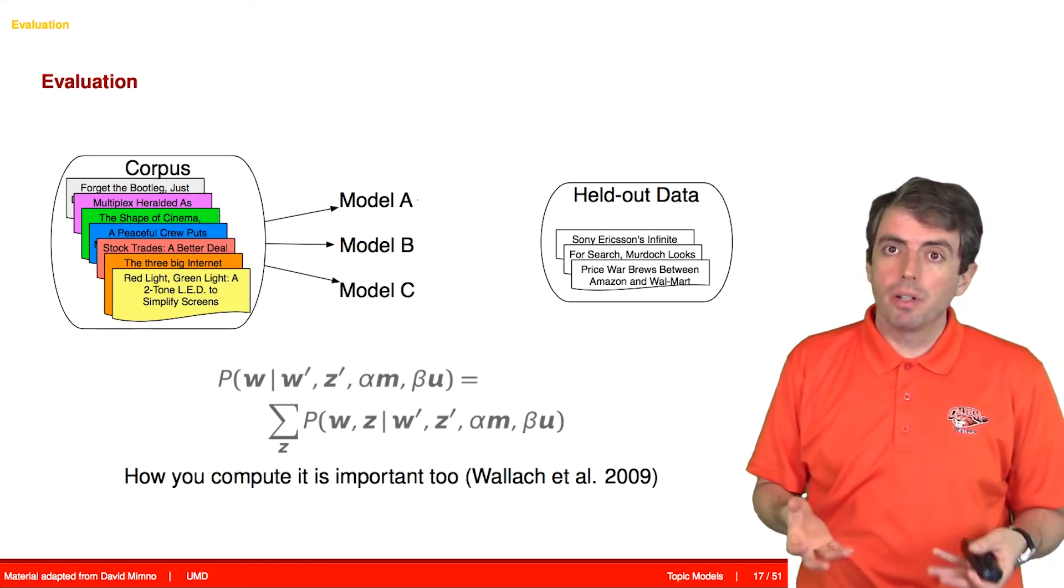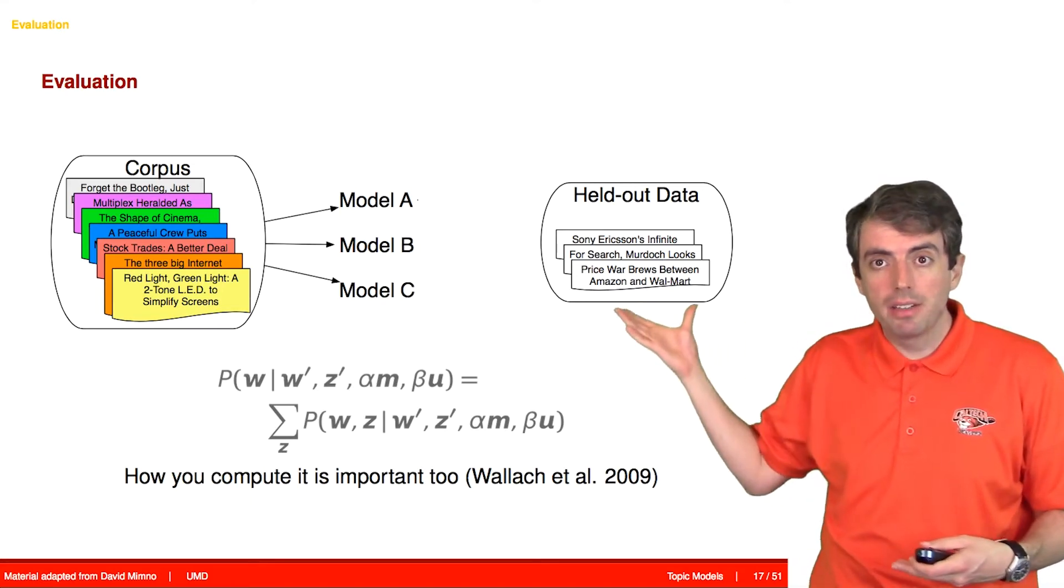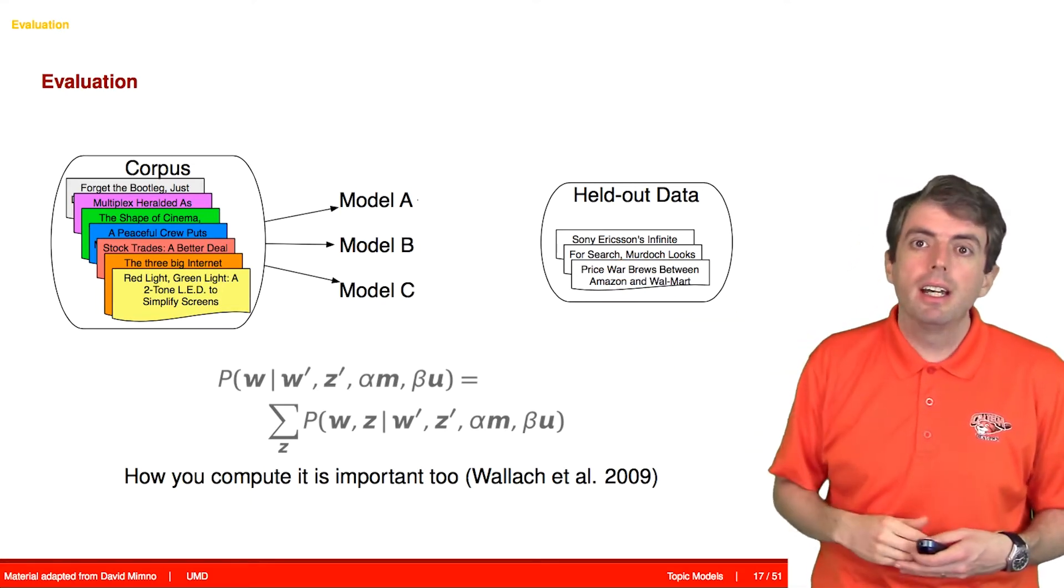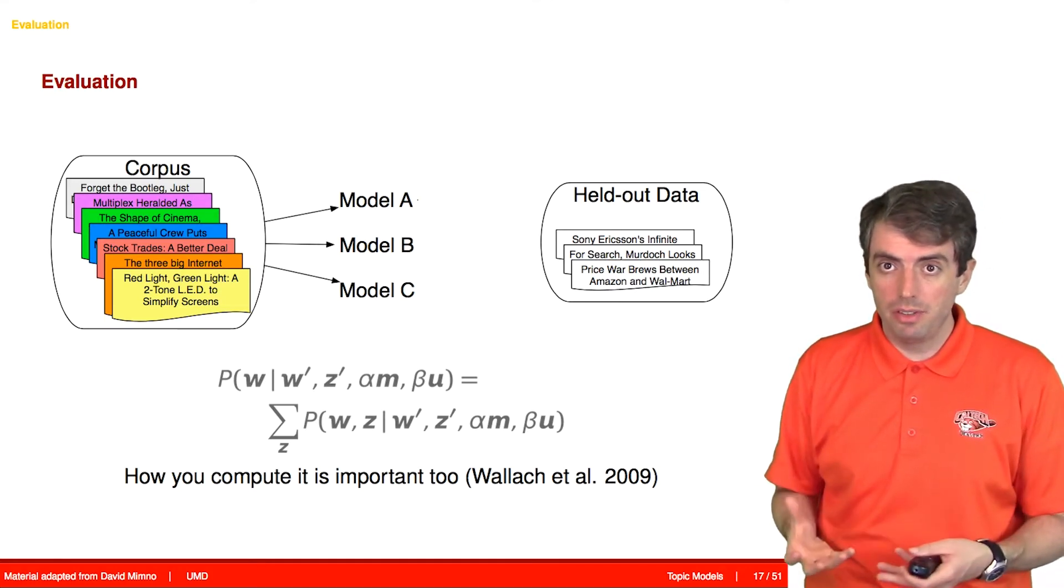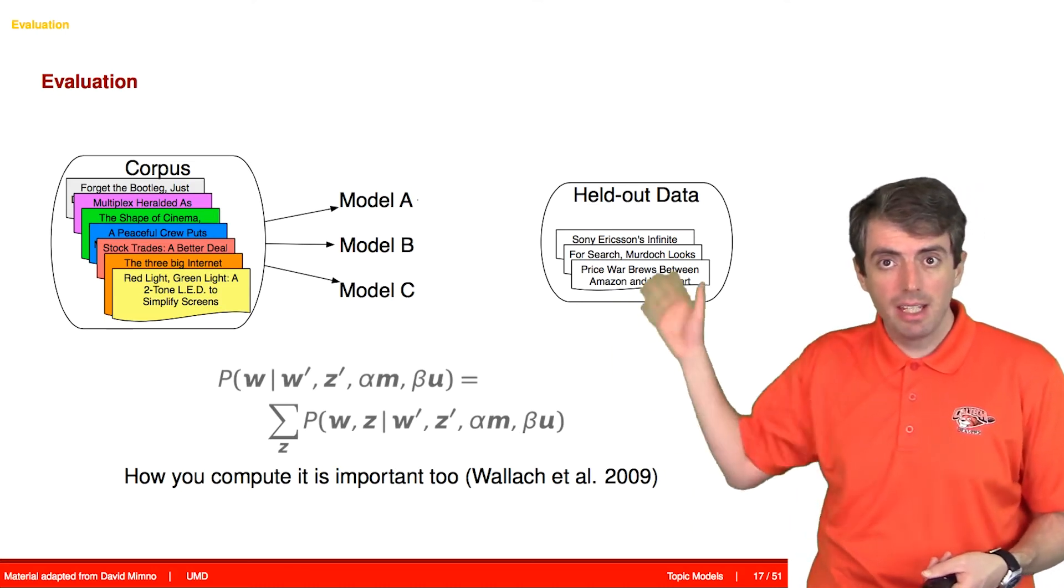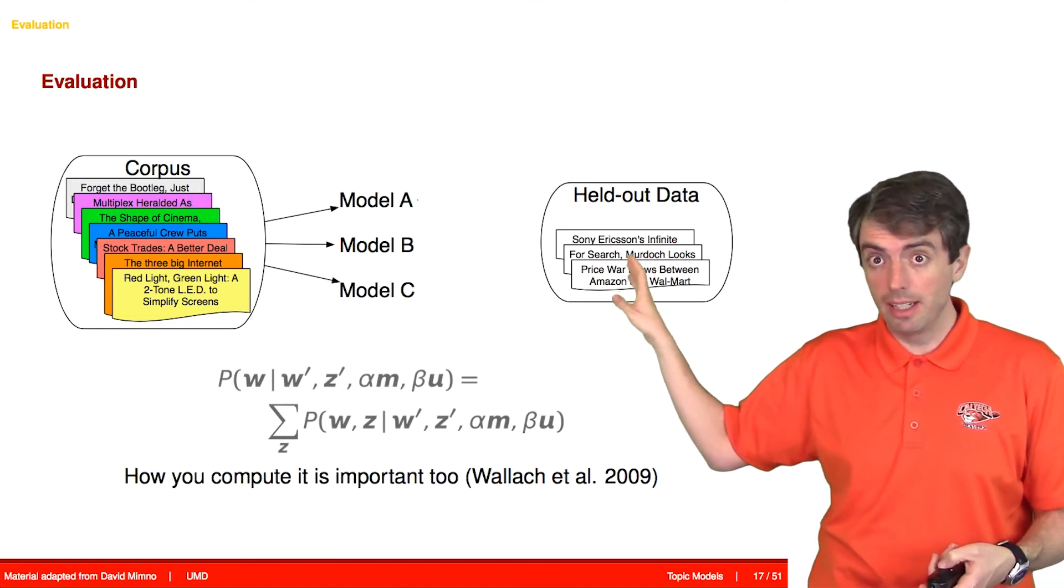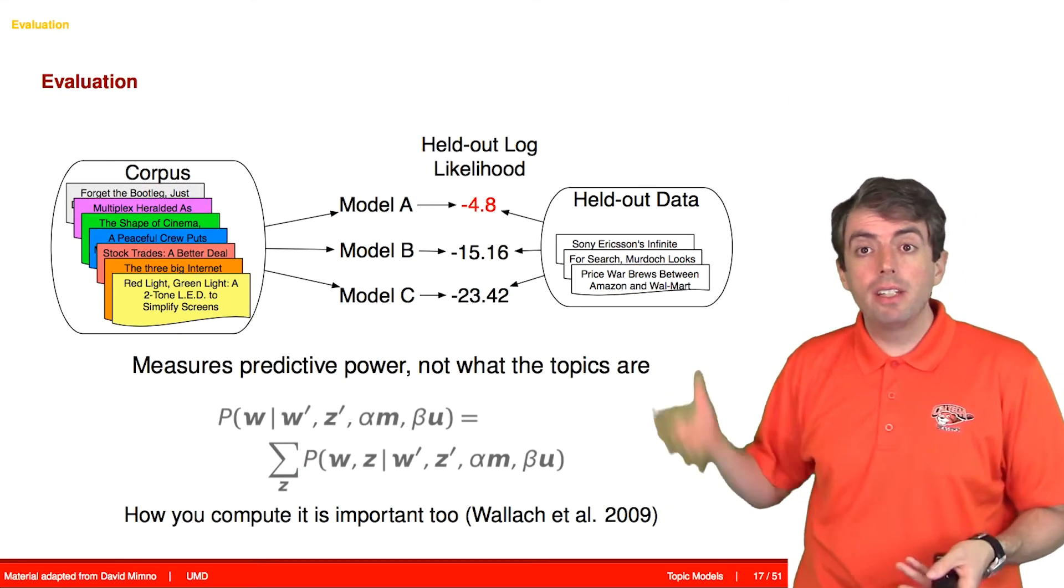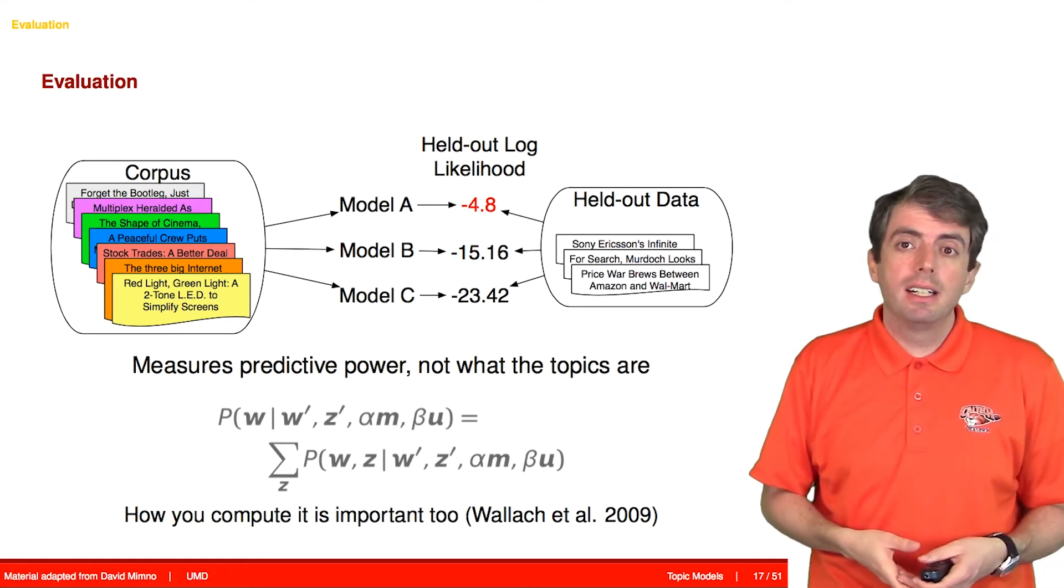The standard approach from statistics to compare these models is to have some other data, what's called held-out data, that you can apply your models to. And because these are probabilistic models, you can ask, here's some new data you haven't seen before, how likely do you think this new data is? And so from each of these, you can get some number that characterizes how good of a model you had.